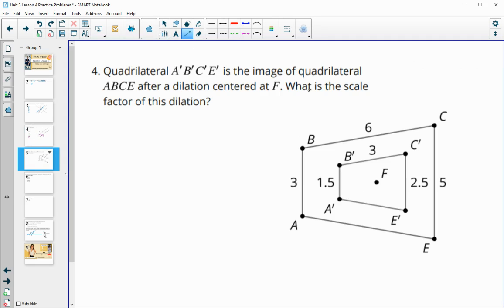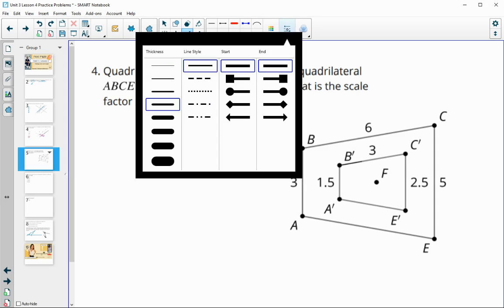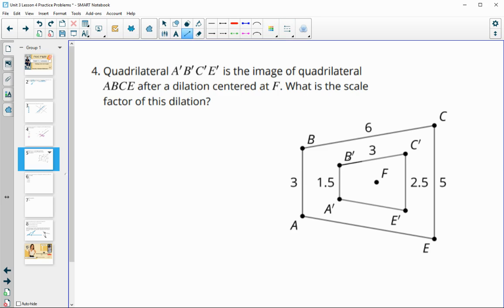Number four, quadrilateral A prime, B prime, C prime, E prime is the image. So this inner part is the image of the outer part after a dilation around F. So what is the scale factor of this dilation? So remember we want to take the new measurement, a measurement from the new shape, and divide it by a measurement from the original. And we want to make sure that we're doing corresponding parts. So we're going to take B prime, C prime and divide that by B, C. And that's going to get us a scale factor of one half.